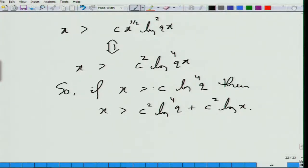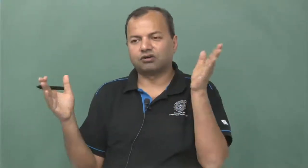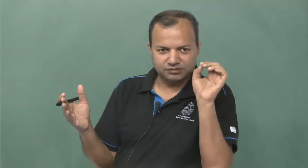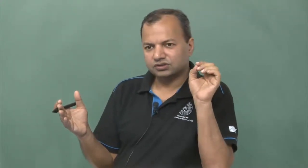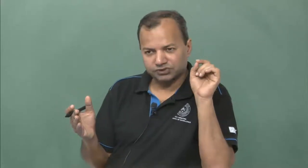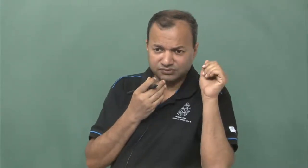Instead of c cubed we can say some constant times c squared — that is not very important. That means if I look at the interval 1 to x where x is of order log^4(q), I am guaranteed to find an element which is outside any proper subgroup of z_q*.